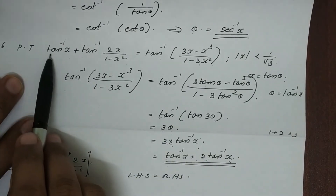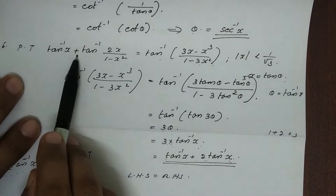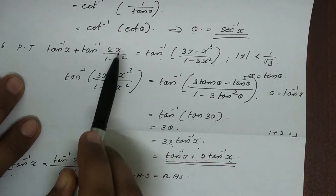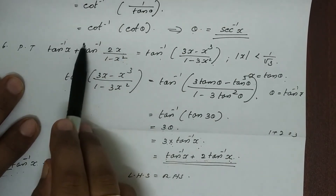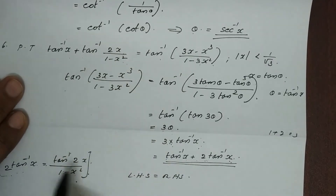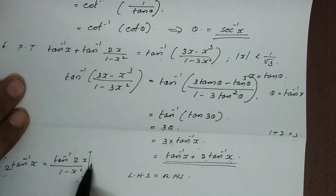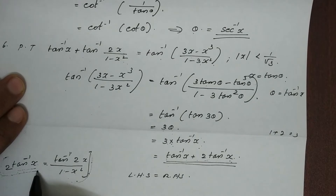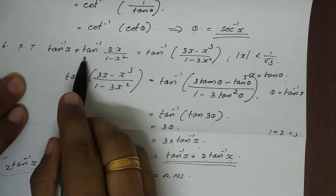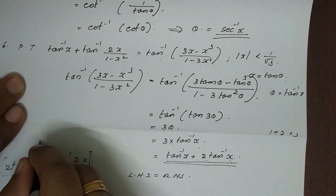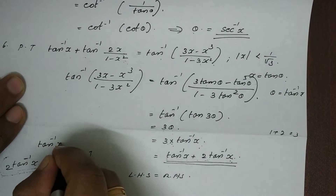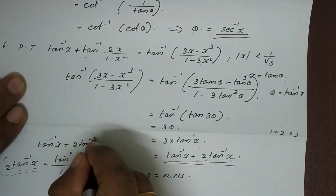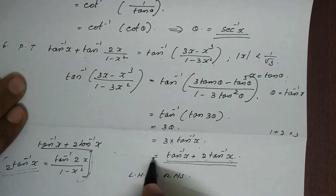LHS is tan inverse x plus tan inverse 2x divided by 1 minus x squared. This tan inverse 2x divided by 1 minus x squared equals 2 tan inverse x. So LHS becomes tan inverse x plus 2 tan inverse x.